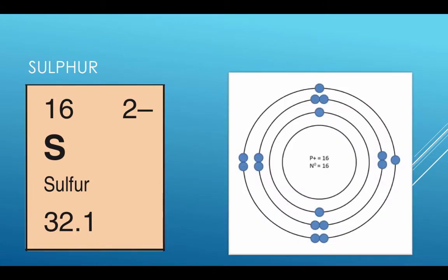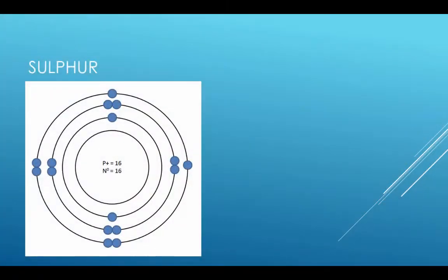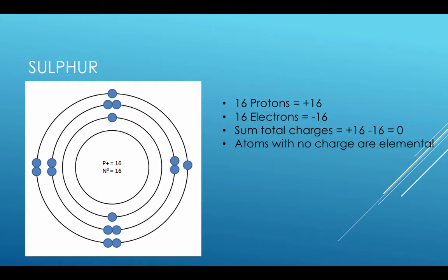This diagram shows you what a model of sulfur may look like. 16 protons, 16 neutrons, and 16 electrons. If you focus on the 16 protons, which are 16 positive charges, and the 16 electrons, which provide 16 negative charges, then this atom has a sum charge of plus 16 plus minus 16, which makes zero net charge. It is neutral or elemental.